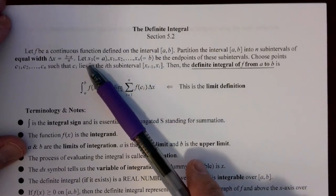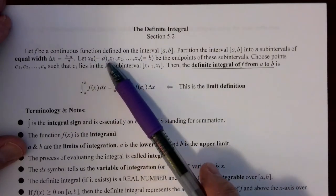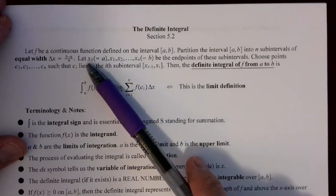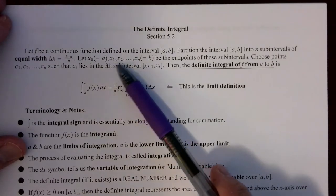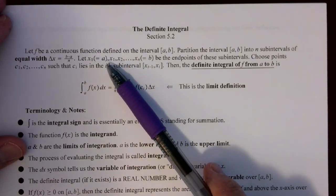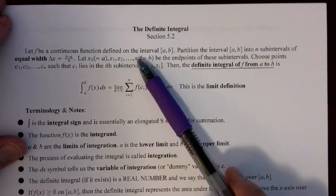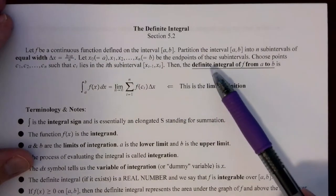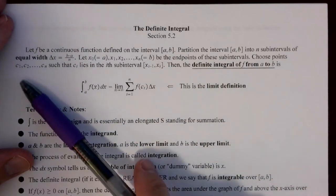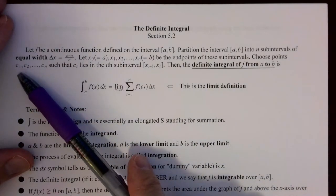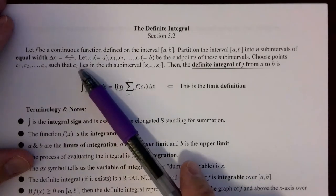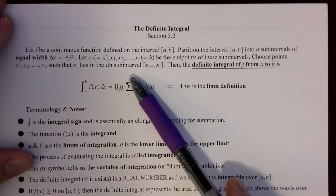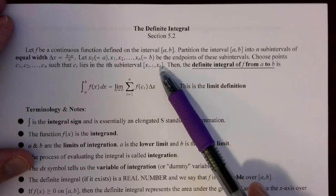The partition subdivides the interval into n subintervals. Our notation has x sub zero as the left endpoint a, then x sub 1, x sub 2, all the way to x sub n, which is b — those are the endpoints. The first subinterval goes from x sub 0 to x sub 1, the second from x sub 1 to x sub 2, and so on. Now here's where it gets a little different: we're going to choose points — using the letter c — for each subinterval.